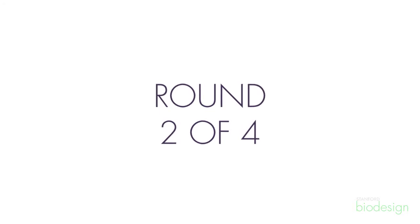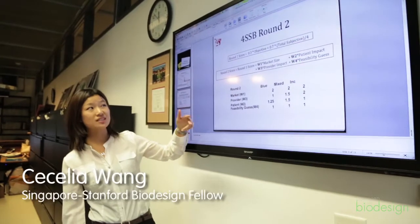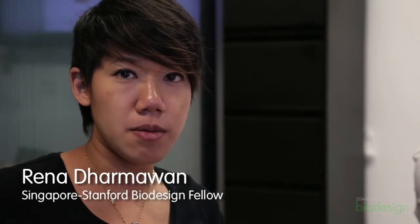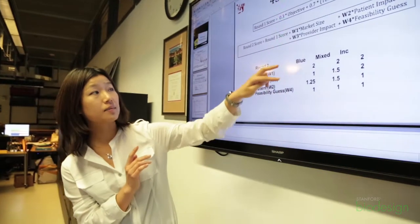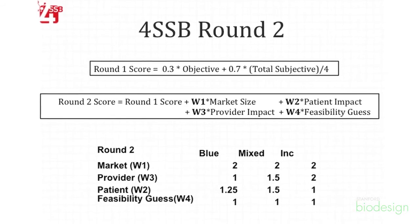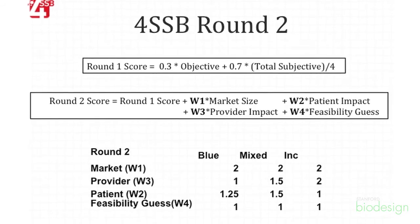In round two we used a more complicated equation. We decided we wanted it to be purely objective, so we added four more objective factors: market size, patient impact, provider impact, and technical feasibility. We also grouped needs into blue sky, mixed, and incremental categories, each receiving different weightings depending on how important we thought those factors were. We then added all the scores from round one and the weighted round two factors to produce a final score.